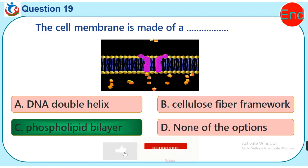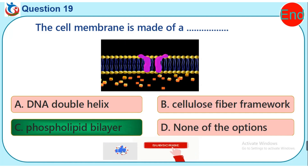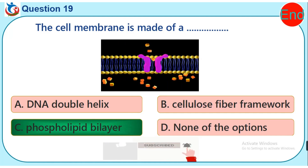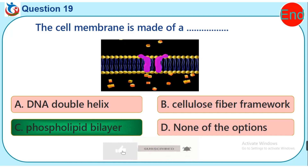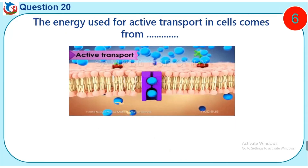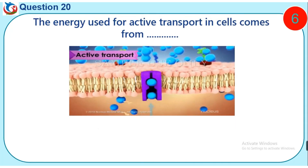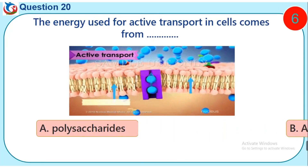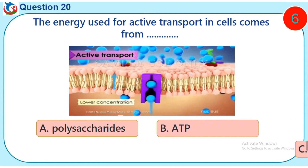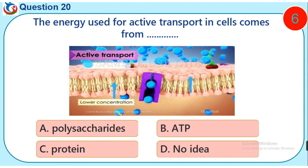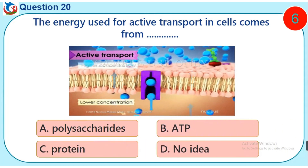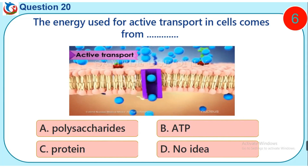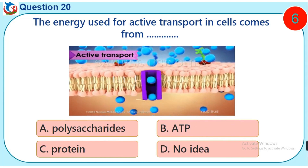Please like this video, subscribe and touch the bell button. It is free. Thank you. Question 20. The energy used for active transporting cells comes from dash. A. Polysaccharides. B. ATP. C. Protein. D. No idea.